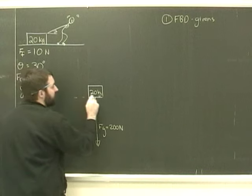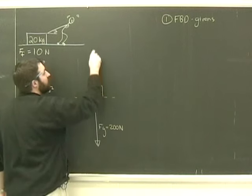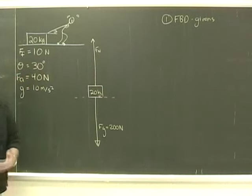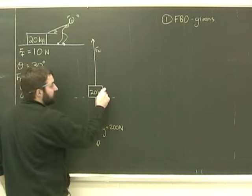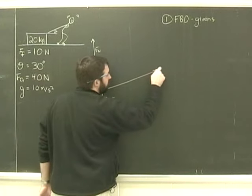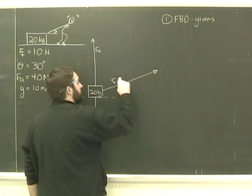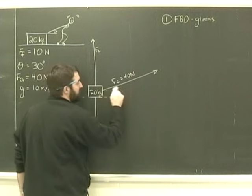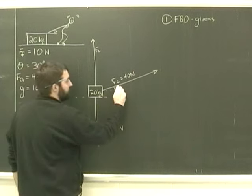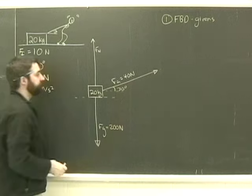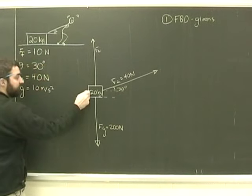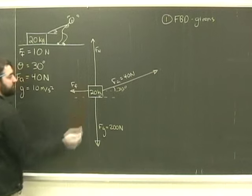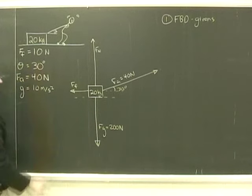Is it resting on a surface? Yes it is. So I've got to put in the normal force, Fn. Is there an applied force? Certainly there's a person pulling. We're going to call that Fa, force of 40 Newtons. This angle is 30 degrees. Fourth question, is there friction? Yes there is. Friction will be in this direction, opposing the motion, and friction is 10 Newtons.